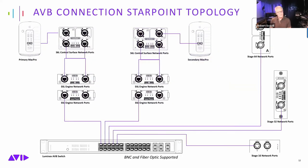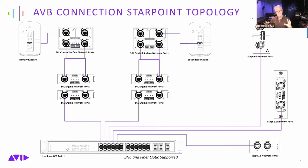We now support star-point connection with S6L systems using qualified Luminex AVB switches. This eliminates the ring topology where you have to create a huge loop — instead you have centrally located switches and just cable out to the switch. This is very handy in performing arts centers and large-scale concert sound where there's significant distance between systems.